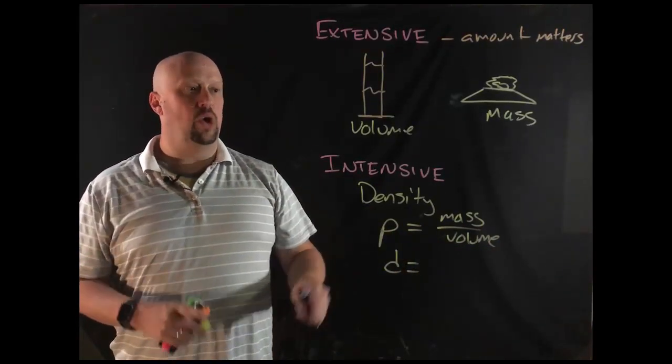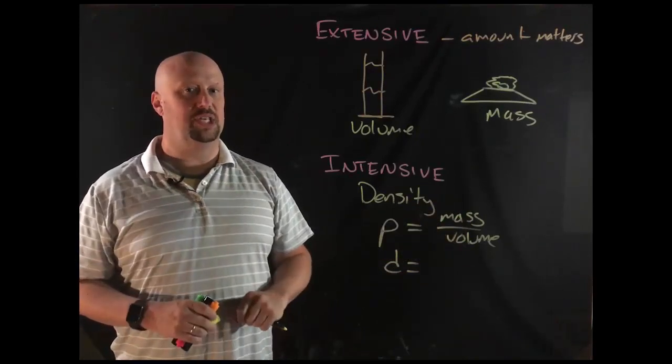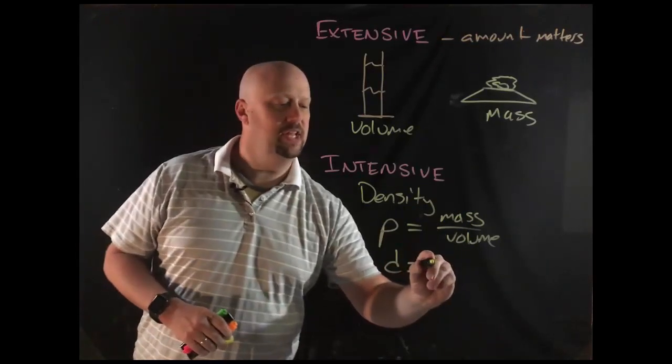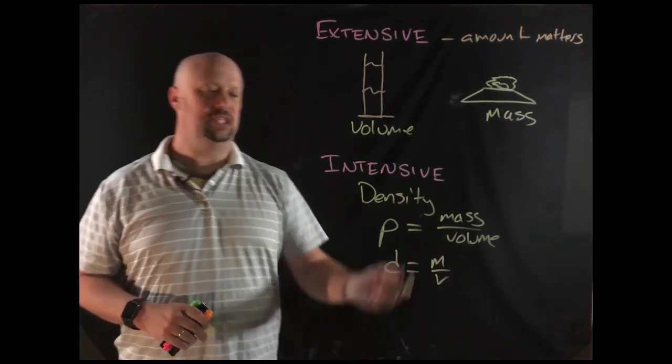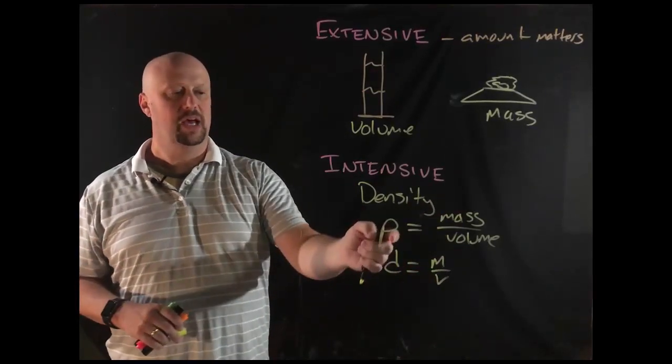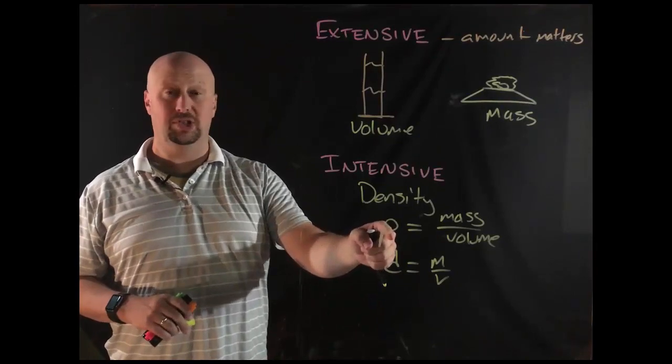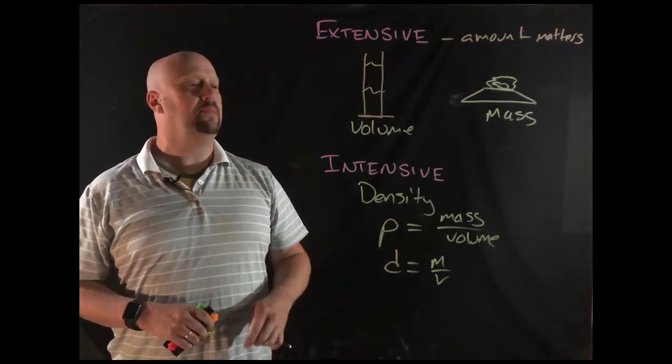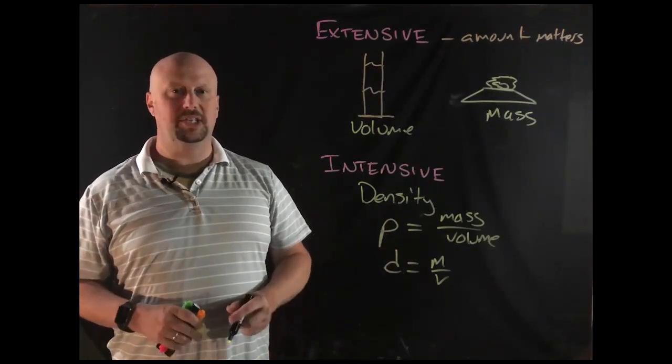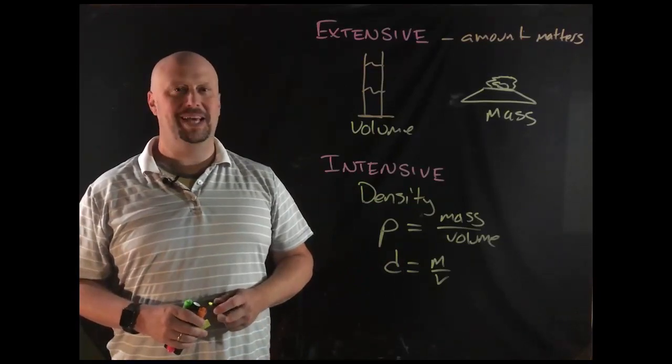So in our next video, we're going to actually work some calculations with this formula. Remember that it's either way. These are both the same formula. They mean the same thing. Just the more technically correct variable there is what looks like a P. It's actually a Greek letter rho. So we're going to work through those calculations in the next videos. All right? Thanks, kiddos.